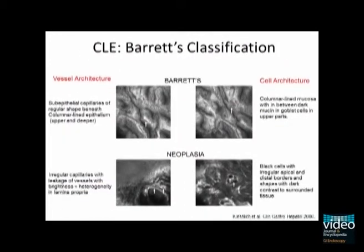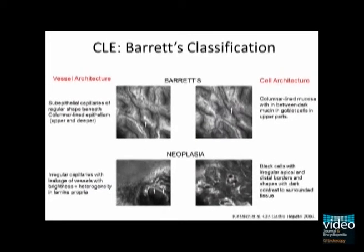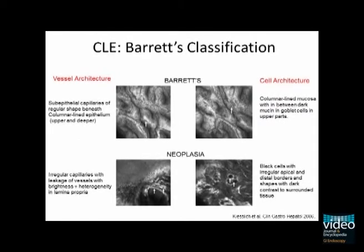To distinguish between benign and neoplastic mucosa, the original classification by Kieslik and co-workers uses features of vascular and cellular architecture of the esophagus. In normal Barrett's mucosa, subepithelial capillaries have a regular shape and a columnar-lined mucosa with in-between dark mucin and goblet cells is found.